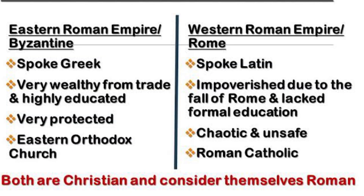Greek was the official language of the Eastern Empire, while Latin was spoken in the Western Empire. Roman Catholicism and conventional Roman culture were both upheld in the West, while the East had a more varied culture that was influenced by various ethnicities, and it was dominated by the Eastern Orthodox religion.